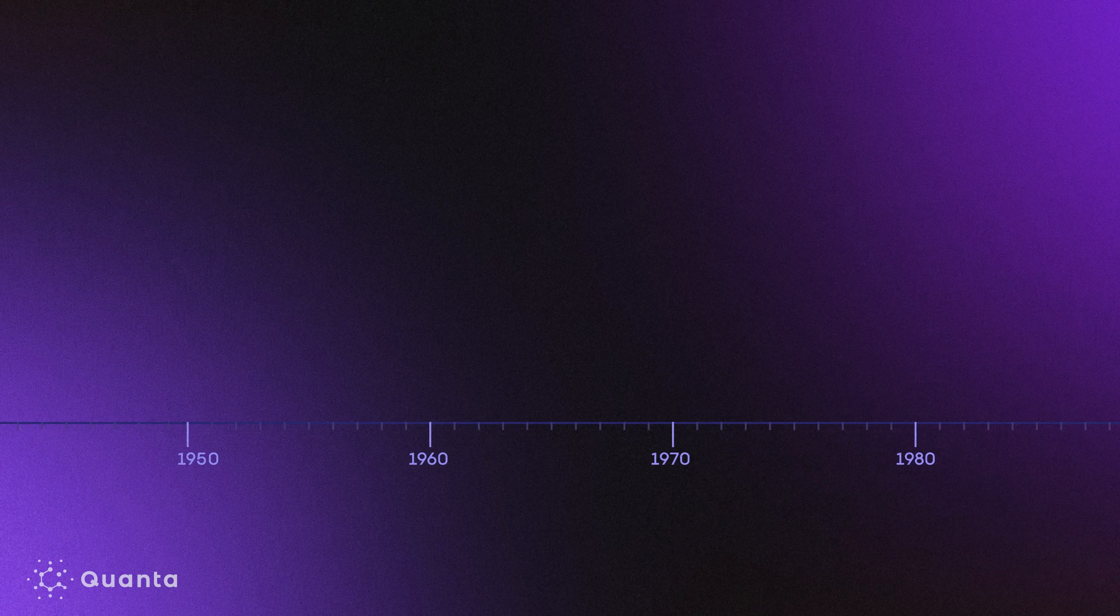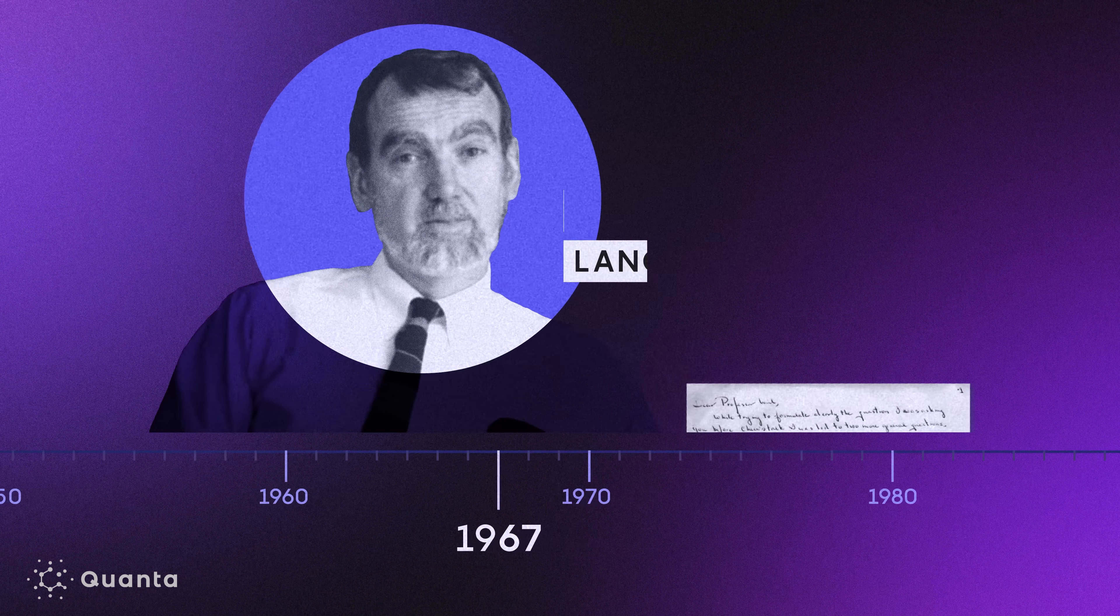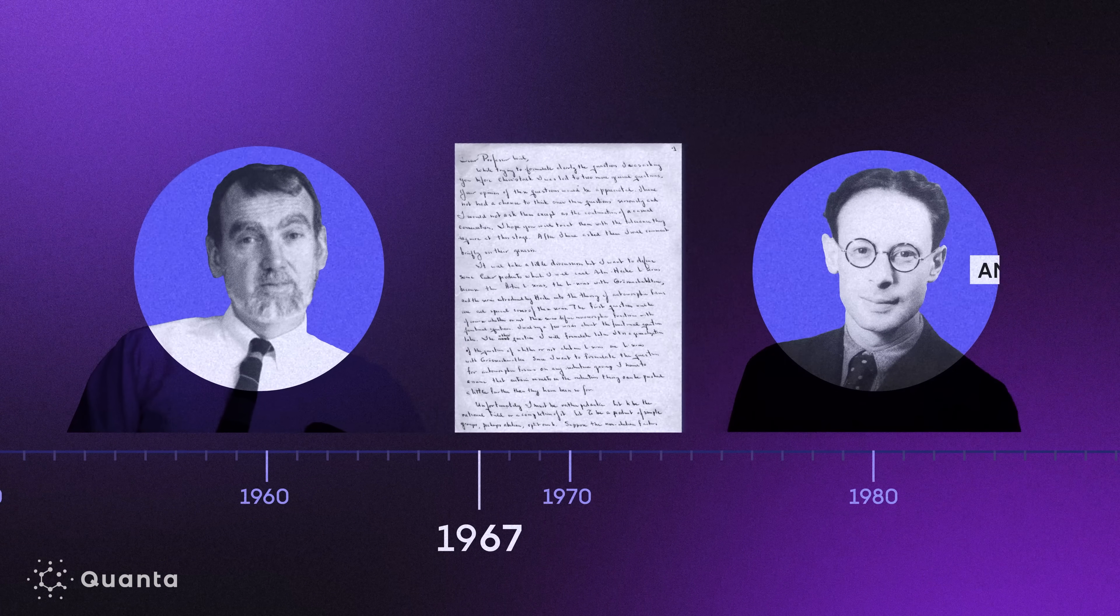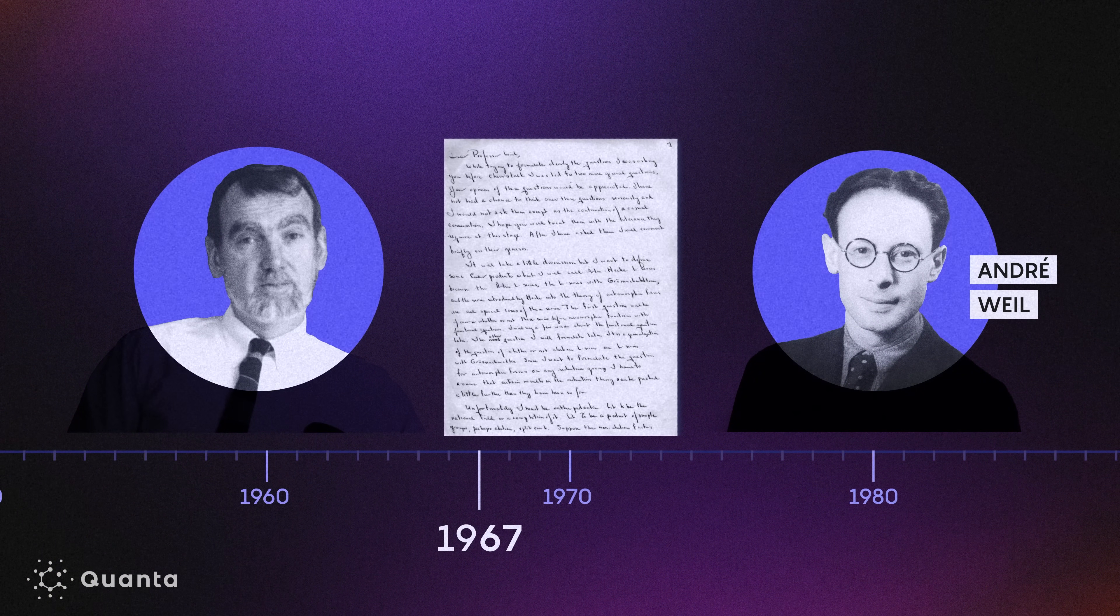What is now known as the Langlands program began in 1967, when the mathematician Robert Langlands wrote a letter to the French number theorist André Weil, describing a plan to connect far-reaching branches of math. There's a lot of parts of number theory, parts of physics, and it has different compartments and different corners that operate in parallel.